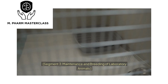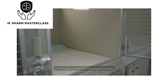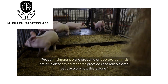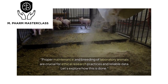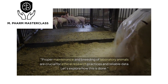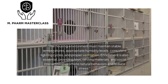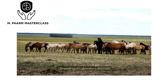Proper maintenance and breeding of laboratory animals are crucial for ethical research practices and reliable data. For animal housing, the environment must maintain stable temperatures, appropriate humidity levels, consistent lighting cycles, and proper ventilation. Enrichment is also essential, providing toys, nesting materials, and social interaction to promote natural behaviors and reduce stress.